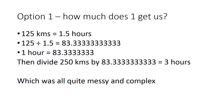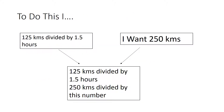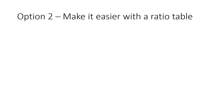The problem with that is it was all quite messy and complicated. There were lots of decimal points because we had a big number and a small number, so however we went about it we were getting messy calculations. In my head I had the equation 125 kilometres divided by one and a half hours, I knew I wanted 250 kilometres, and it was all quite complicated. We put it in the calculator — it might have been right, it might have been wrong. So we're going to make it easier and more solid by using a ratio table.